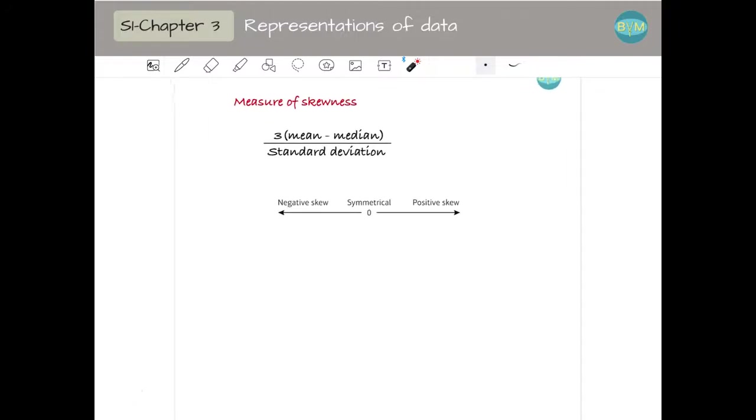We can measure the skewness in different ways, but one very usual way is this formula here. It's three times the difference between the mean and the median divided by the standard deviation. When this is zero, that means that the mean and the median are the same, we have symmetrical. When this is positive, the mean is greater than the median, so we have positive skew. When this value is negative, we have negative skew. The higher the value is, the higher the skewness.